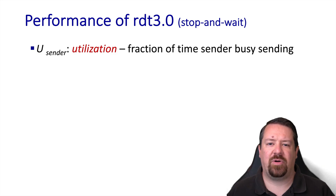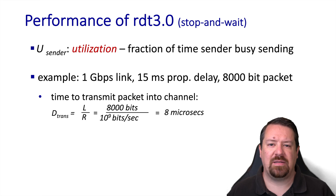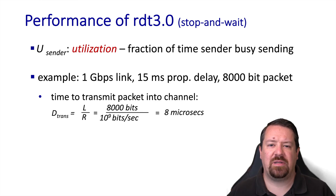With an ideal protocol, the utilization would be 1. To put some numbers on that, we'll look at a 1 gigabit per second link with a propagation delay of 15 milliseconds, over which we're sending 8,000-bit packets, or 1,000-byte packets. Our transmission delay for one of those packets will be 8 microseconds, or 0.008 milliseconds. Just by looking at the units, we can see that the transmission delay is extremely small relative to the propagation delay.